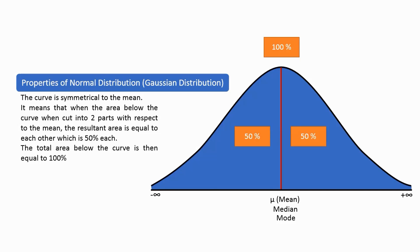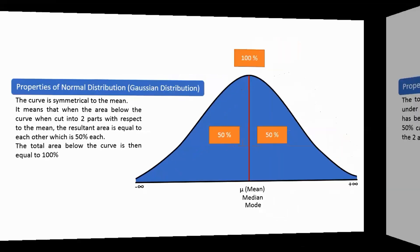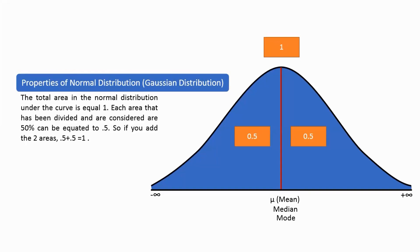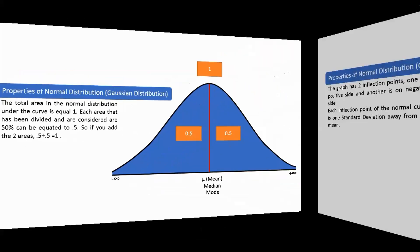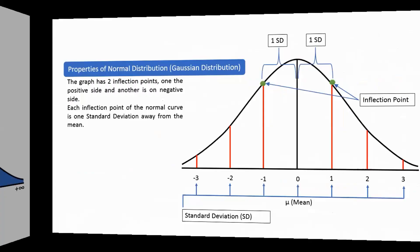As you can see in the graph, when we divide the normal distribution curve in the middle, we get two areas which are symmetrical, each given 50%. And when we combine the two areas, we get 100%. Another property is that the total area in a normal distribution under the curve is equal to 1. Each divided area of 50% can be equated to 0.5. So if you add the two areas, 0.5 plus 0.5 equals 1.